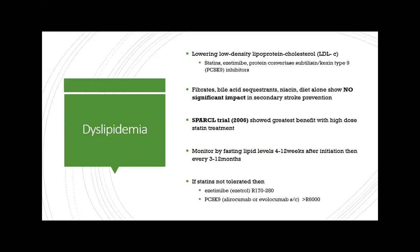Another important aspect of secondary stroke prevention is lowering cholesterol, specifically LDL cholesterol. Statins are proven best, alongside ezetimibe and PCSK9 inhibitors. Fibrates, bile acid sequestrants, and niacin have shown no significant LDL reduction in stroke prevention, as seen in the SPARCL trial of 2006. Higher statin doses produce greater LDL reduction. LDL should be checked four to twelve weeks after starting therapy and then every three to twelve months. Where statins are not tolerated, monoclonal antibodies and ezetimibe are alternatives, though significantly more expensive.